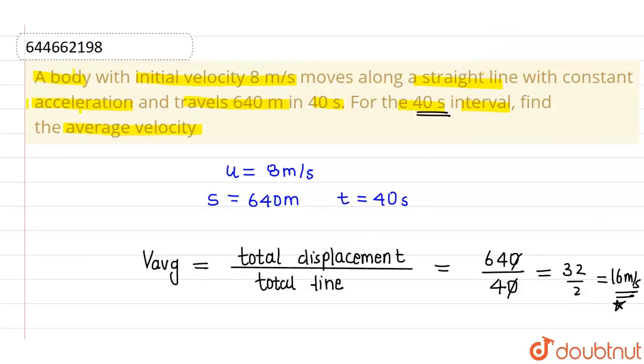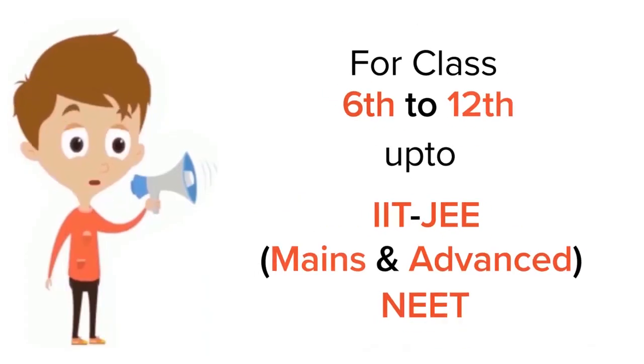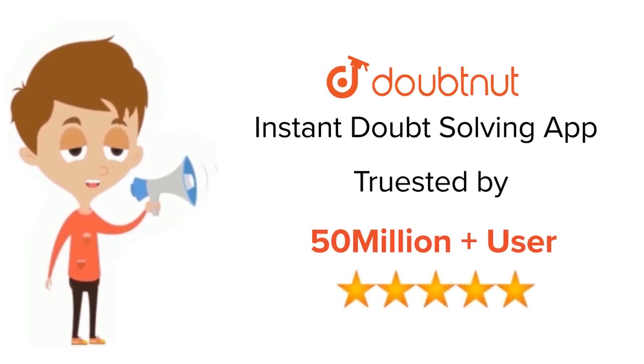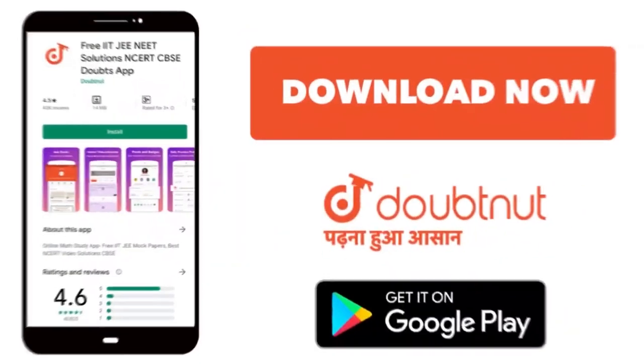This is total displacement divided by total time. So answer is 16 meter per second. I hope you understood, thank you. For class 6 to 12, IIT-JEE and NEET level, trusted by more than 5 crore students, download Doubtnet app today.